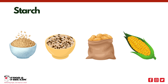Starches are a type of complex carbohydrate and the main source of carbohydrates for most people. Starches are made from long chains of simple sugars that our bodies have to break down to use for energy. Foods that contain starches include grains like wheat, oats, and rice; legumes like dried beans, lentils, and peas; and starchy vegetables like corn, peas, potatoes, and winter squash.